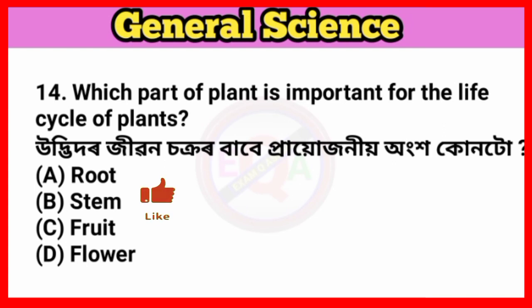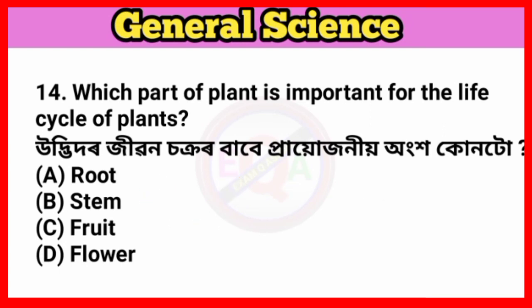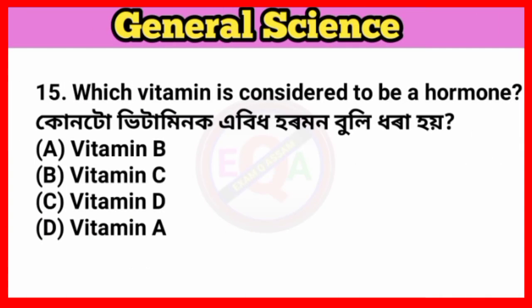Which part of the plant is important for the life cycle of plants? Answer option D: Flower. Which vitamin is considered to be a hormone? Answer option C: Vitamin D.